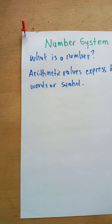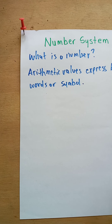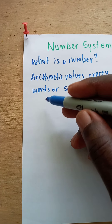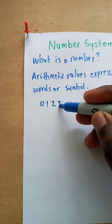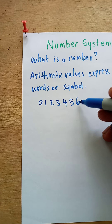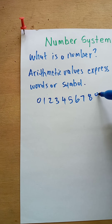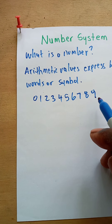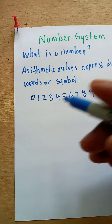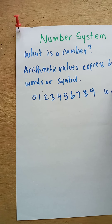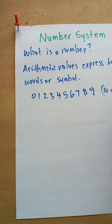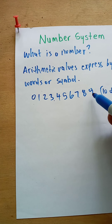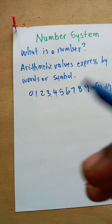We speak of the arithmetic value of numbers, and the numbers we use in our numerical system are zero, one, two, three, four, five, six, seven, eight, nine — ten digits which we use in our numerical system. Ten digits.